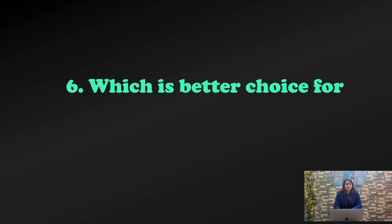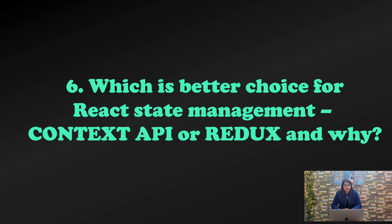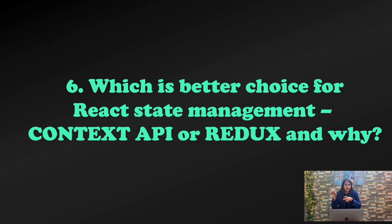The next question is: which is the better choice for React state management? This is related to the prop drilling issue I mentioned in the first video. React provides the Context API, and there is also an external library called Redux. The debate is: Context API is built into React with no extra overhead, while Redux is an additional library. You need to know when to use Context API versus Redux and what kind of projects call for each.